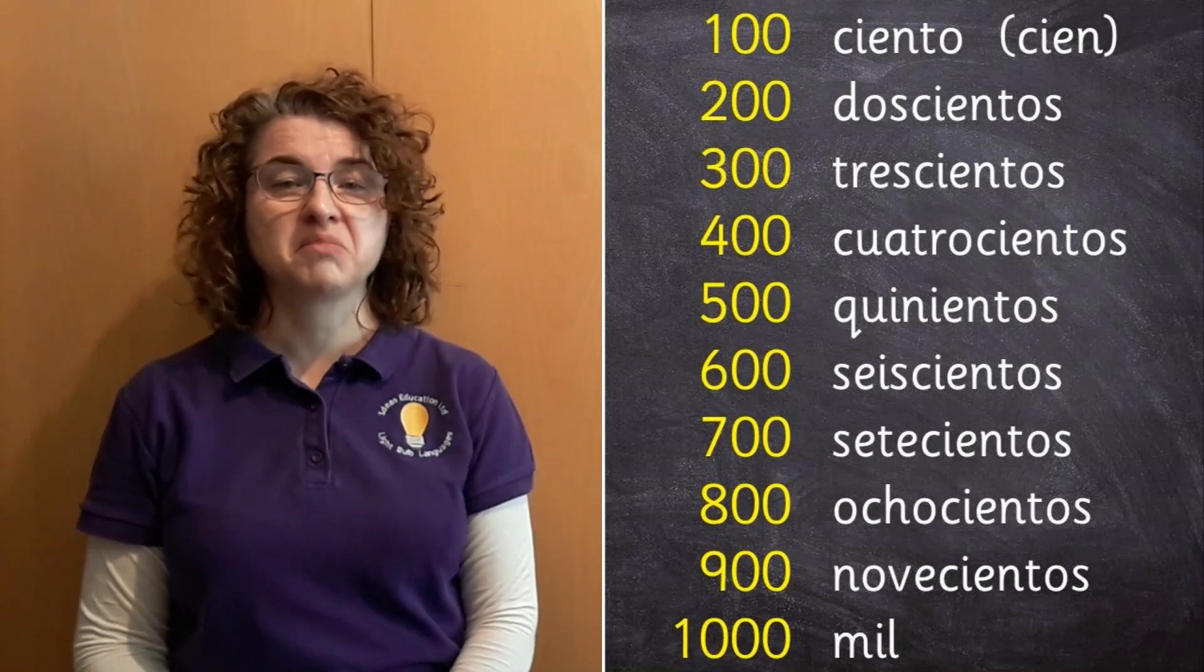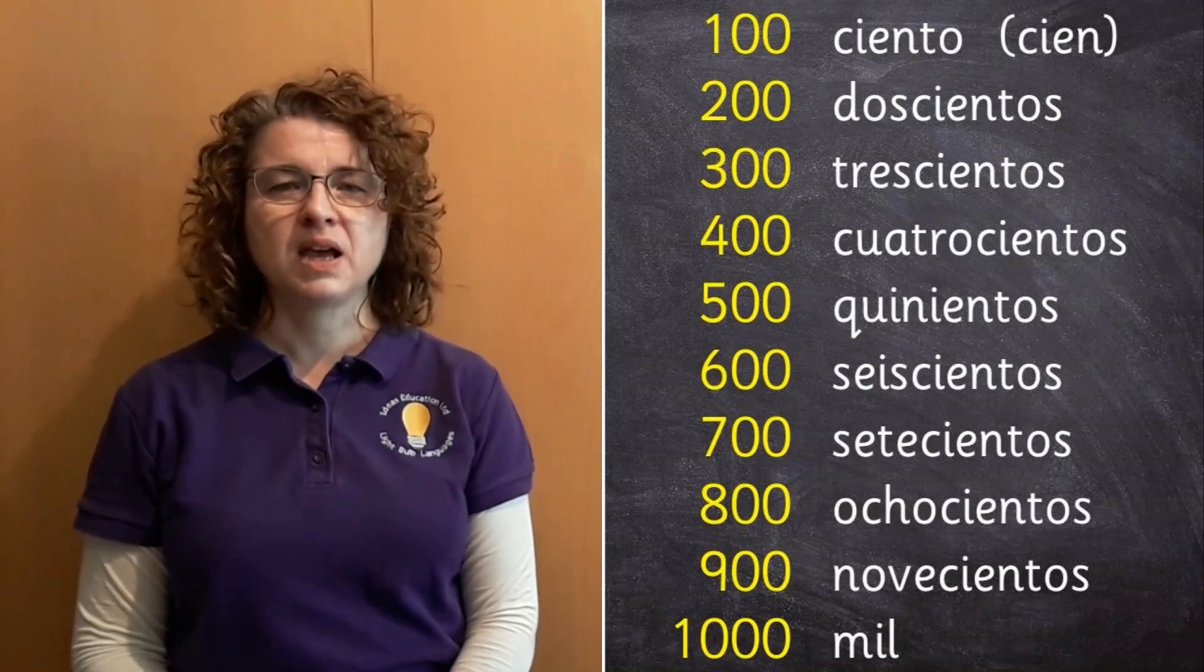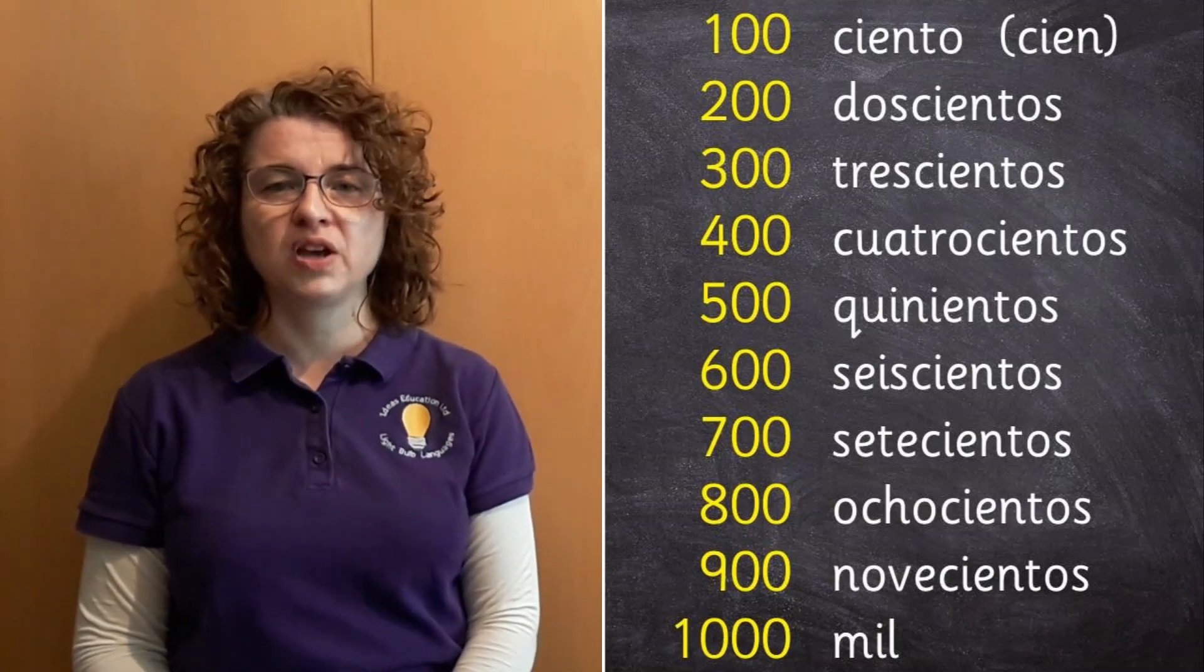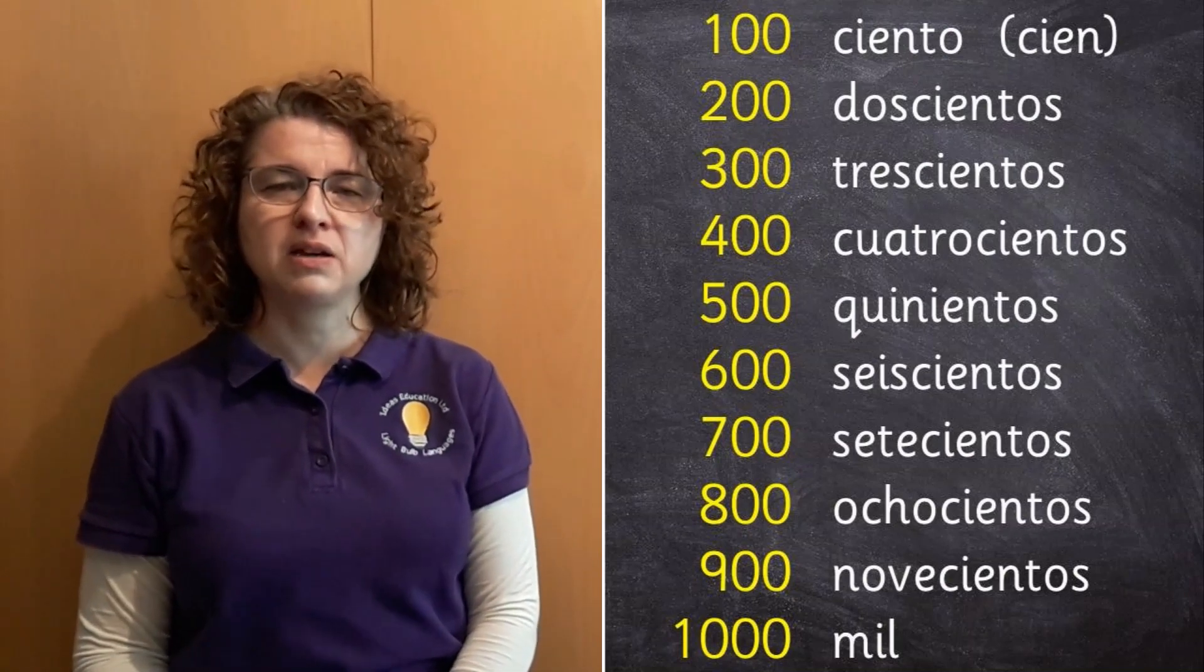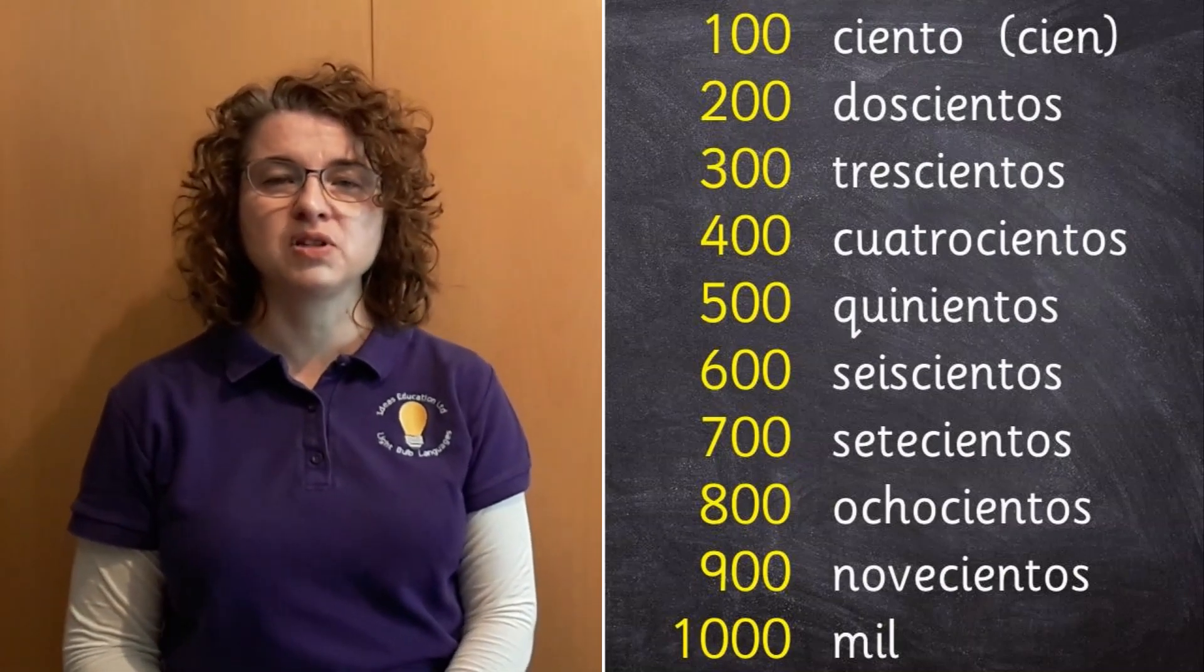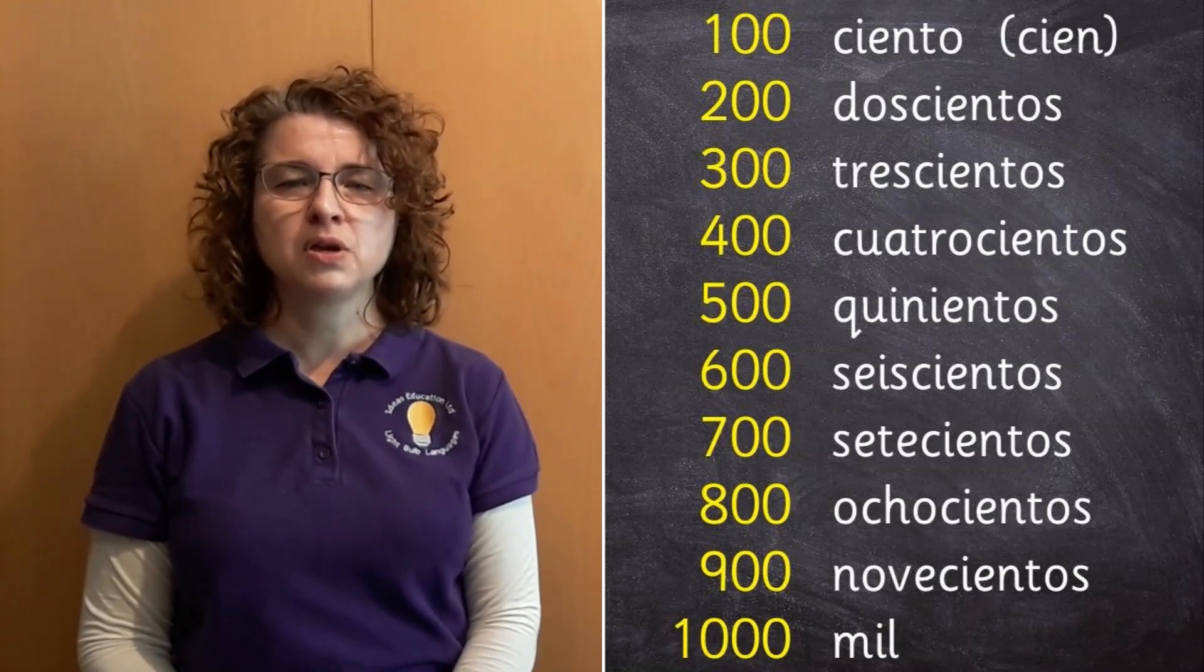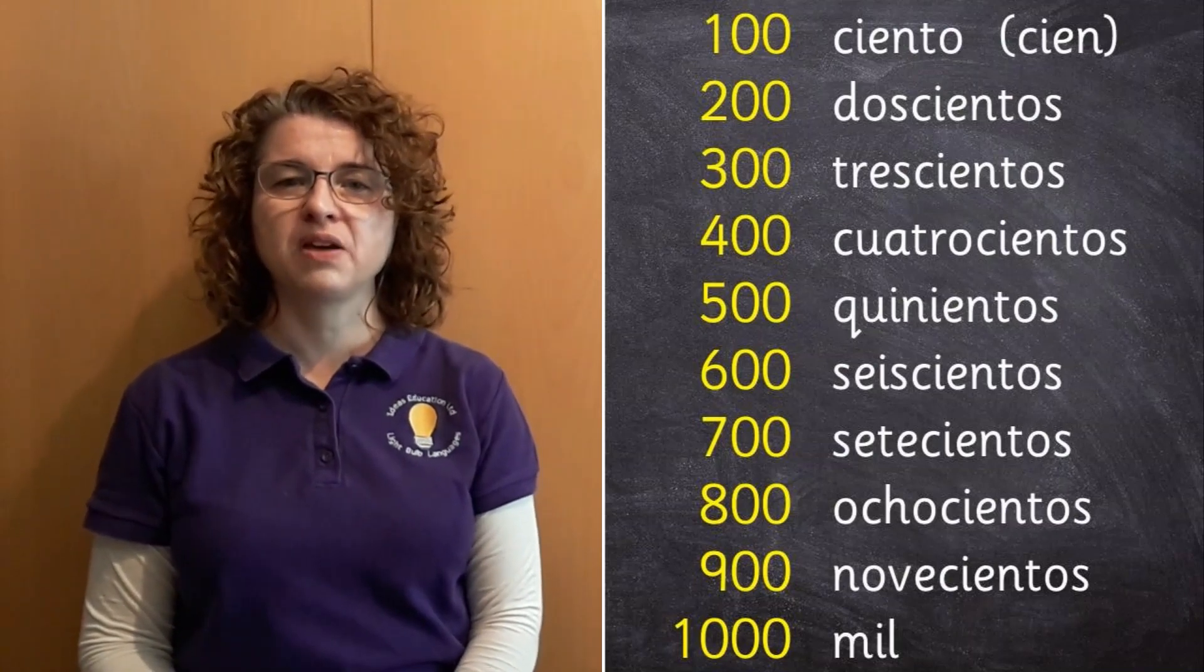Then setecientos, that's just missing the i in siete. And finally novecientos, that's more related to noventa for ninety than it is to nueve for nine. But they're recognizable, I think. Then you can see a thousand is mil. Have a think about all those maths words that you know where mil means a thousand. There are lots of them.